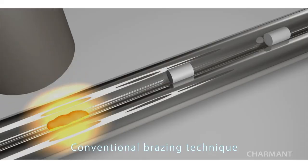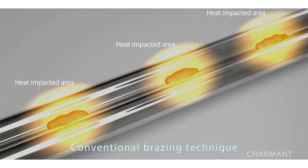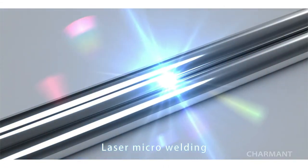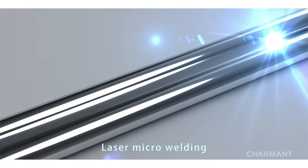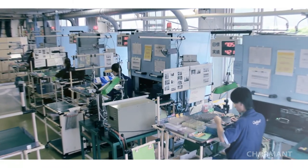The technology is a result of 5 years of collaboration between Charmant and the Joining and Welding Research Institute of Osaka University. This welding technology is crucial when manufacturing products using Charmant's exclusive material, Excellence Titan, as it can join the material without losing its integrity.